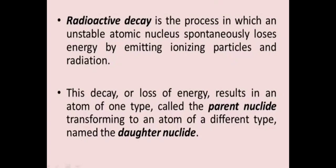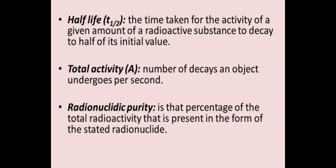Next, we discuss some terms related to radioactivity. First is radioactive decay — the process in which an unstable atomic nucleus spontaneously loses energy by emitting ionizing particles and radiation. This decay results in an atom of one type, called the parent nuclide, transforming to an atom of a different type, named the daughter nuclide. The next term is half-life, denoted T½ — the time taken for the activity of a given amount of a radioactive substance to decay to half of its initial value.